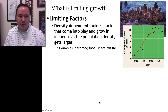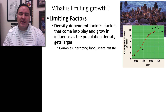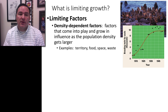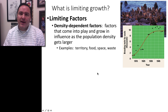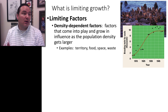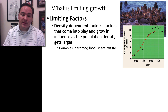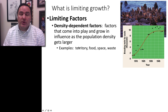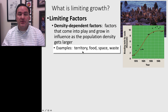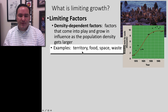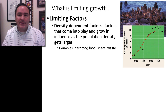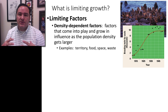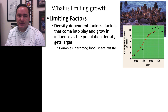What's limiting the growth? We call these limiting factors, and there are two kinds. One is called density-dependent factors — these are factors that come into play and grow in influence as the population density gets larger and larger. Some examples you could probably come up with on your own are territory, space, food, and where you're going to put your waste. There's just not enough resources to go around.